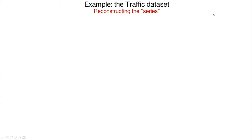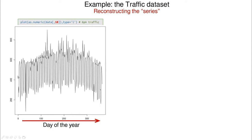I'm going to take the traffic dataset and plot just one of the hours — this is 6 p.m. You can see the series has 360 observations, one per day of the year, and we see the traffic pattern at different days. There is a strong seasonality related to the fact that on weekends traffic is much lower than in work weeks.